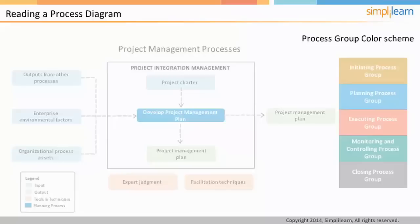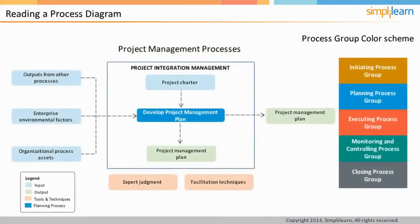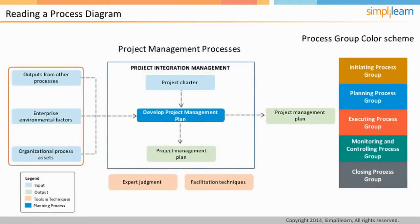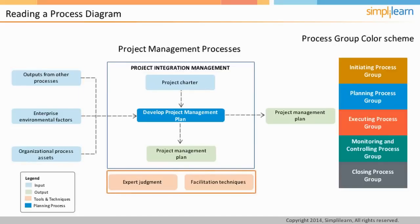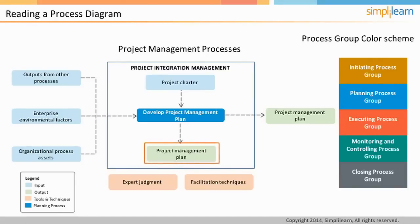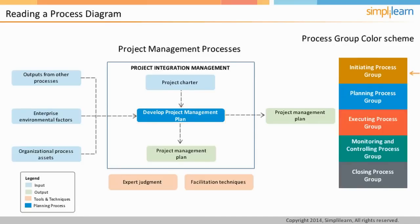As you can see in the project management process diagram, the elements within the knowledge area represent the inputs from the same knowledge area. Other elements represent the inputs from other knowledge areas. These represent the tools and techniques used in the process, and these are outputs of the process. Some outputs are fed into the knowledge areas other than the one that the process is part of. The process in the image is color-coded based on the process group — initiating process group is in yellow, planning process group is in blue, and so on.